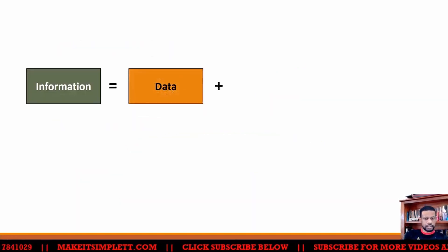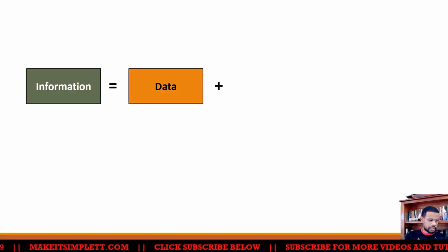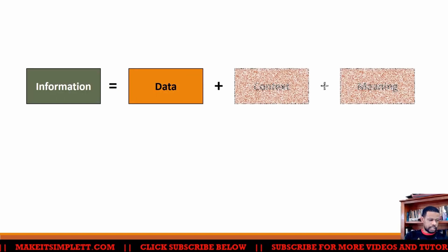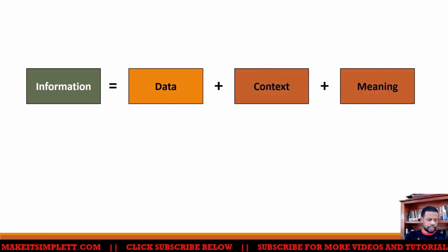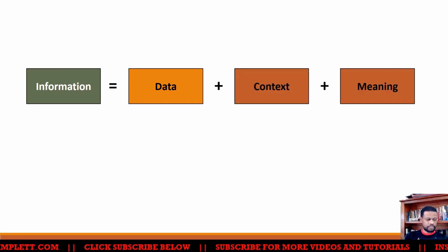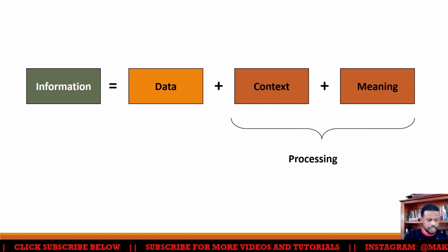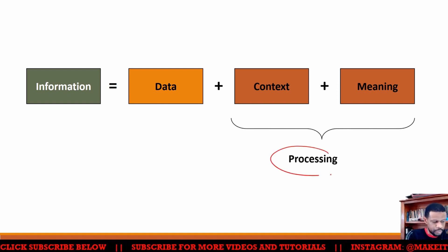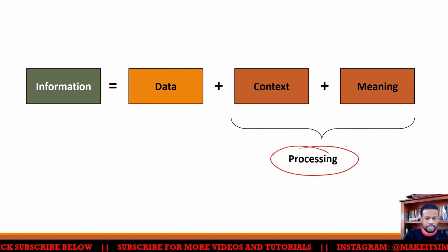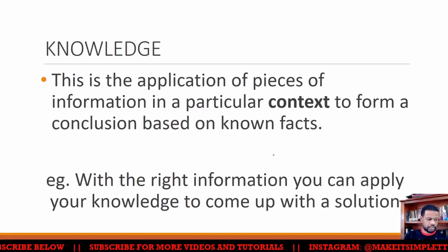Information is formed when you take data and give it a context and meaning. So if you give data a context and meaning, then you turn it into information. And in order to give something context and meaning, it has to go through some sort of process. So processing will make a difference.